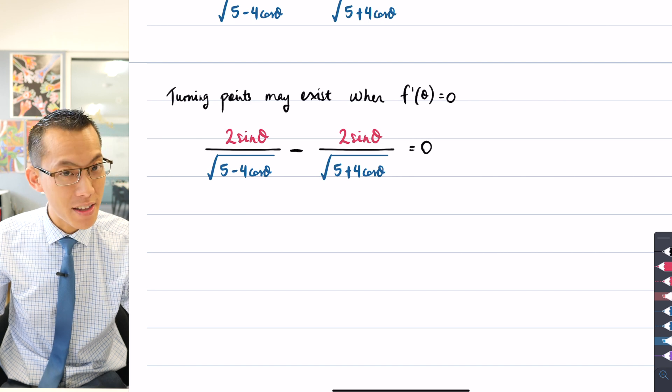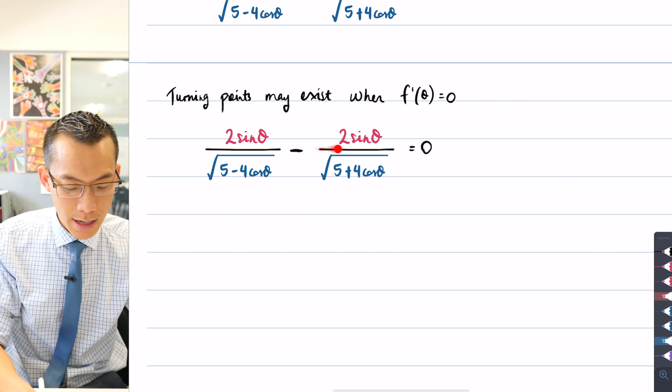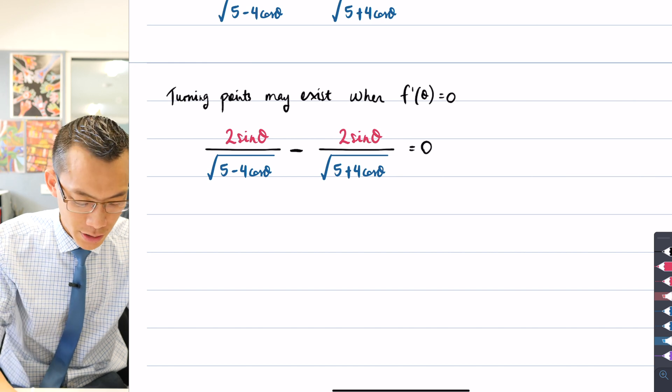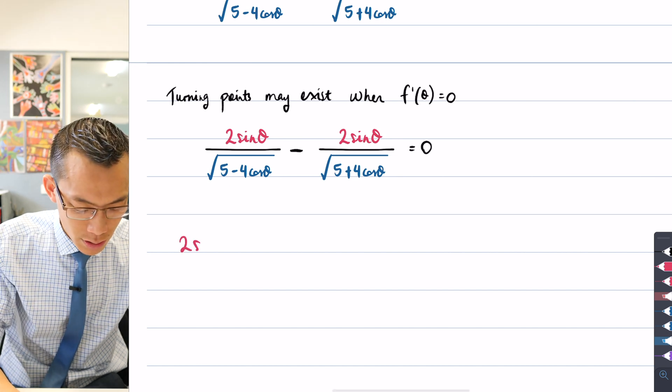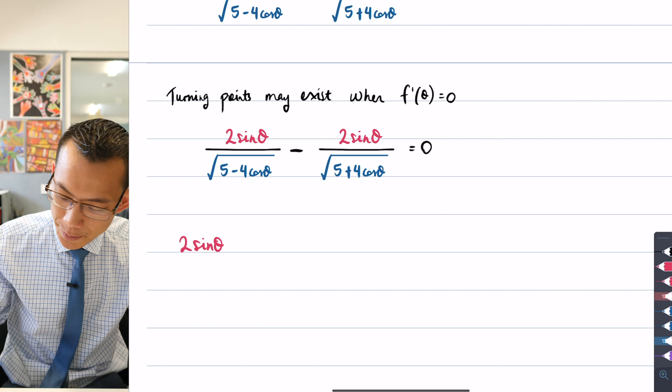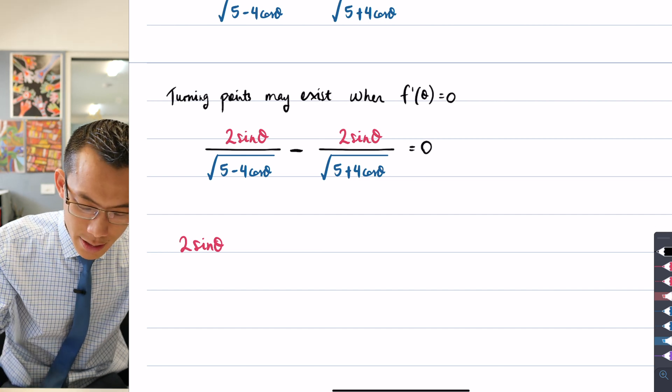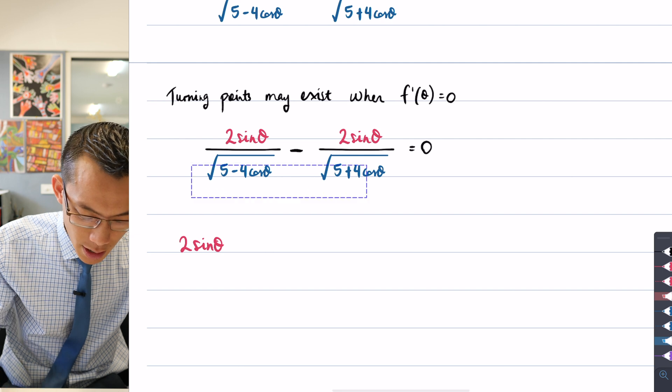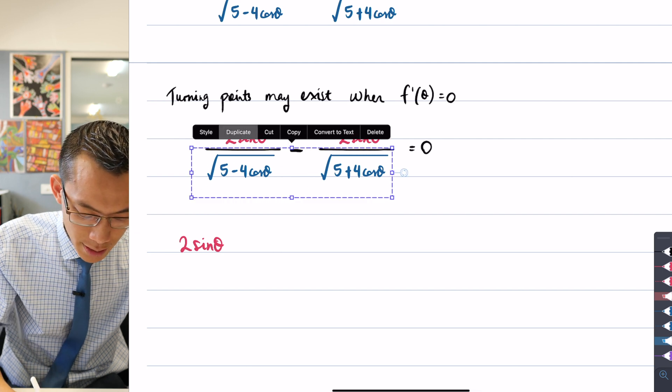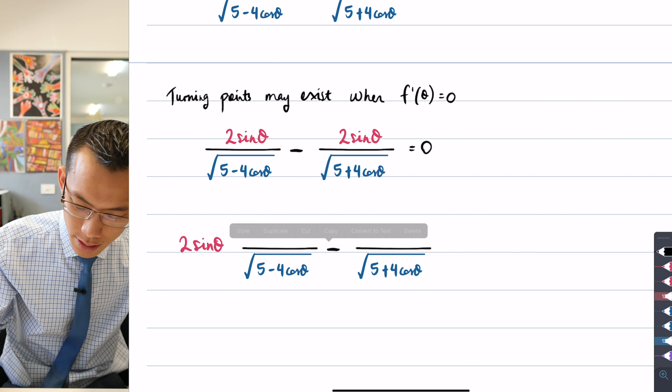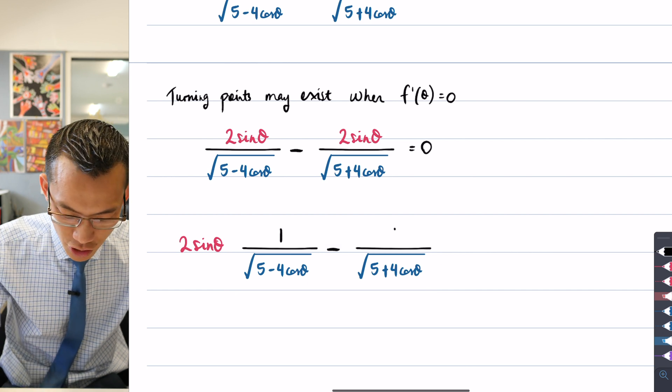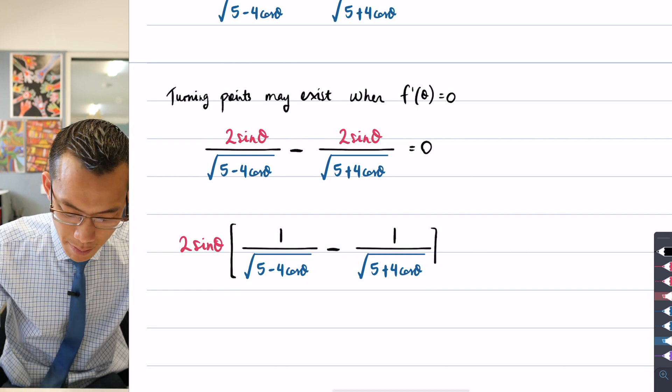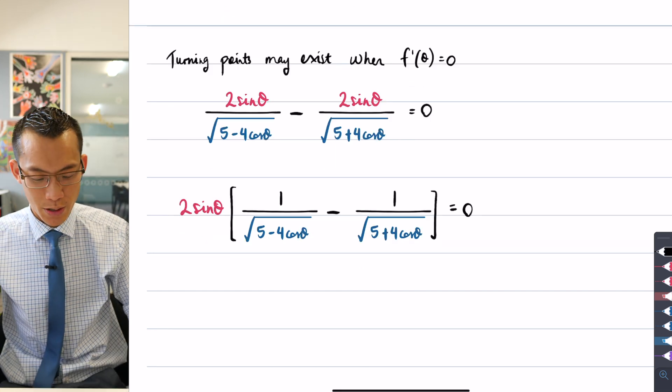Well, the most obvious thing that I can see is that I can factorize out this 2sinθ on the numerators of both fractions. So if I do that and write that 2sinθ out the front, what that leaves me with is an enormous fraction. I factorize out that 2sinθ, so I end up with these having the ones on the numerators left and I'm multiplying through by that entire thing. That's equal to zero.